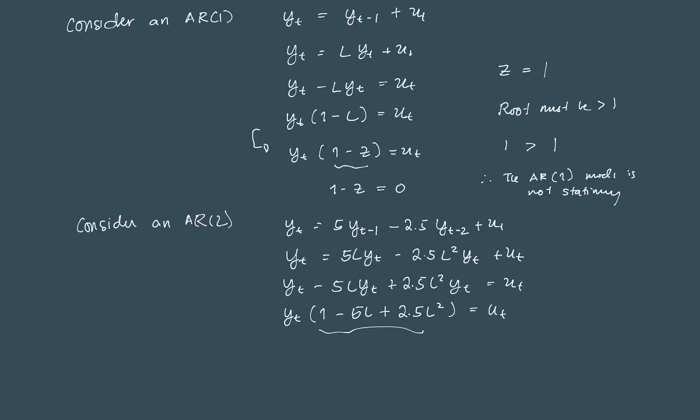What we do is we set that to 0: 1 minus 5 L plus 2.5 L squared equal to 0. If you get the roots of that, you'll get z_1, the first root, that's equal to 1.77, and z_2 is equal to 0.23. How do you solve for the roots? You can complete the square, factor out, or use the quadratic formula. I use the quadratic formula. Since these are our two roots, notice that z_1 is greater than 1, but z_2 is less than 1. Our condition is that all roots should lie outside the unit circle, that is, all roots should be greater than 1. But since we have one root here that's not greater than 1, the AR(2) model is also not stationary.